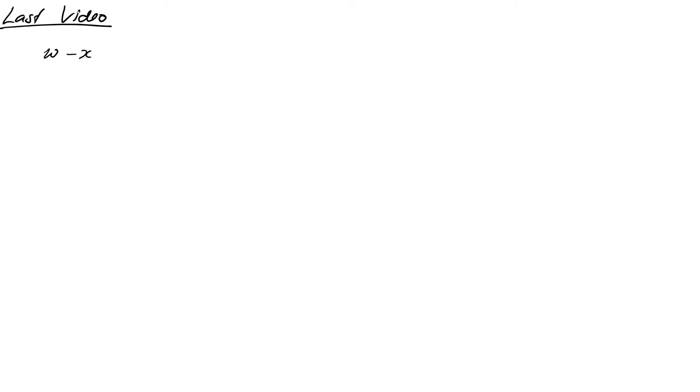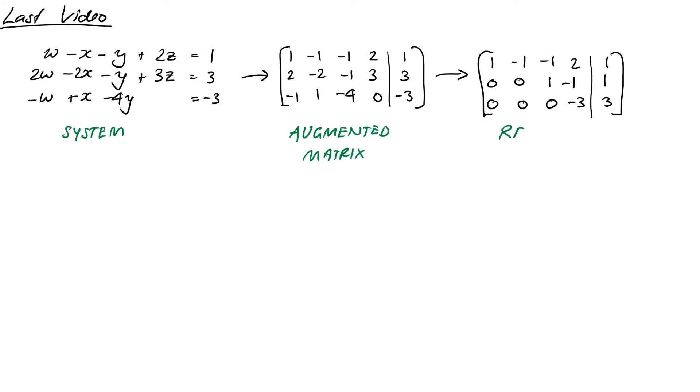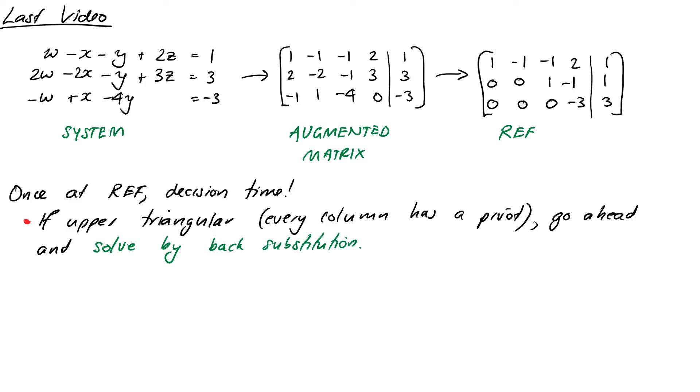So let's start off with the example that we looked at last time. So remember that we started with a system, we put it in an augmented matrix, and we reduced it to row echelon form. In terms of developing a method for solving these systems, we've actually come to a decision point. So if our system was in upper triangular form, that would mean every column has a pivot apart from the right-hand side, then we could just go ahead and solve it by back substitution. Otherwise, we're going to continue on and take our system to reduced row echelon form.